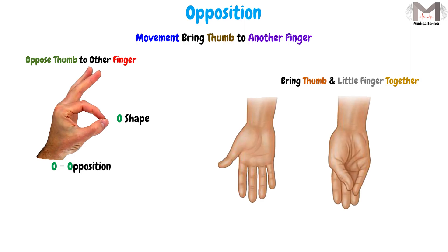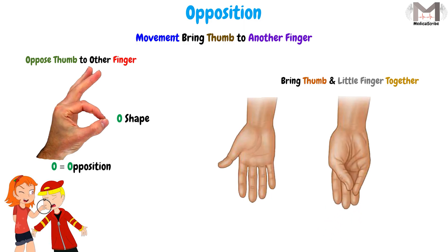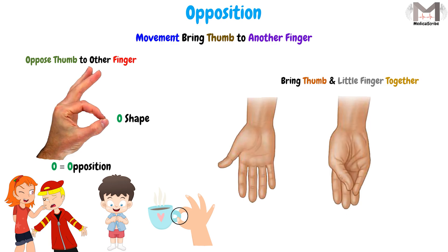So the opposition is the movement that will bring the thumb to other fingers of the same hand. This movement is used frequently when we need to pinch something, when we need to button our shirt, or when we lift a teacup by its handle.